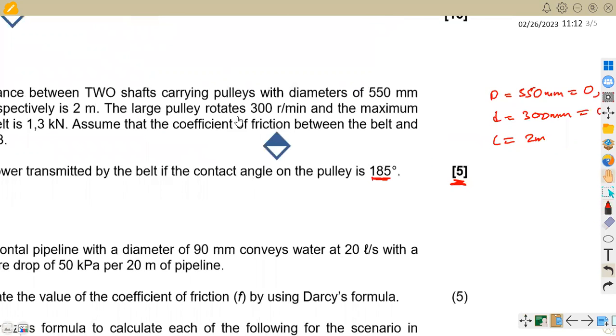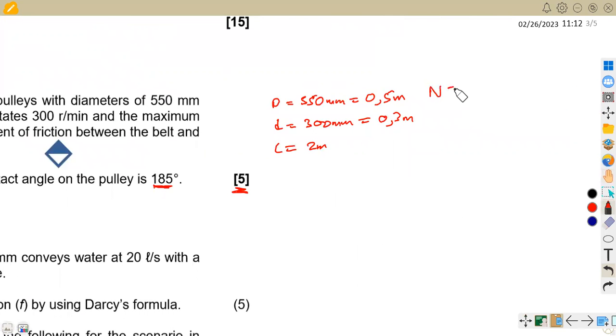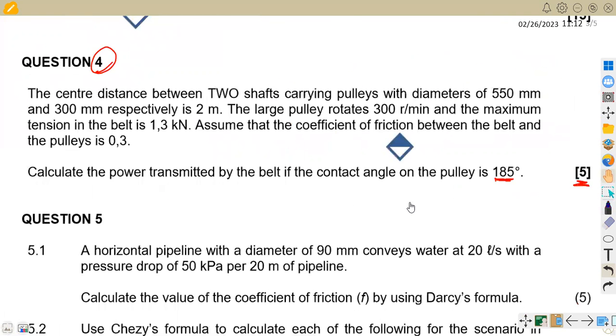Then we have got the larger pulley is rotating at 300 revs per minute. So for the larger pulley, we have got 300 revs per minute. So this corresponds together. Then for this D, are we given anything? We are not given.